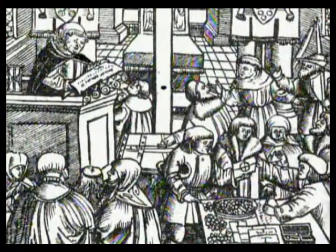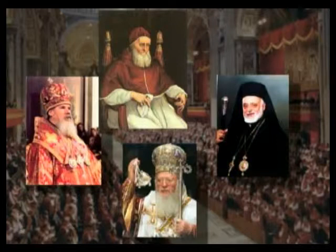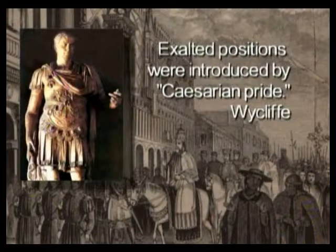He rejected the doctrine of transubstantiation — that the wafer becomes literally the body and blood of Jesus. He rejected indulgences. He taught that the apostolic churches, the true churches, only had elders and deacons, not popes and archbishops and cardinals. He believed that anything beyond elders and deacons was introduced by, in his own words, 'Caesarian pride.' Wycliffe was very bold against the Pope, saying it is blasphemy to call any man the head of the church, save Christ alone.